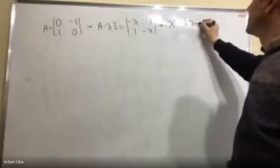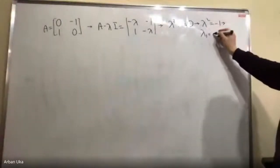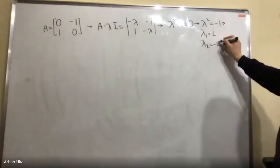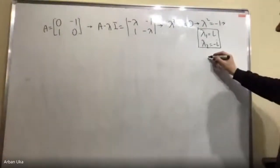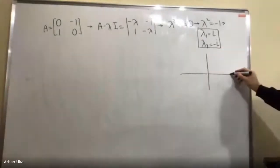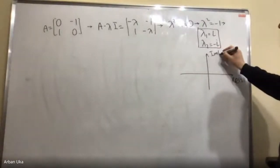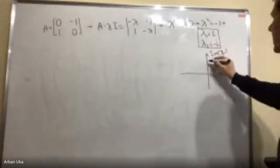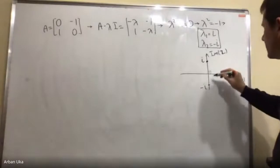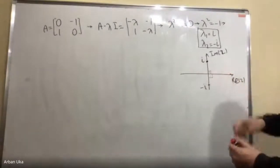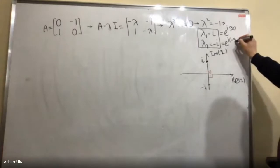Lambda squared is equal to minus one, so lambda one is equal to i and lambda two is equal to minus i. These are two complex eigenvalues. It is important to locate these numbers in the complex plane — the real part is on one axis, the imaginary part on the other. i is at plus 90 degrees and minus i is at minus 90 degrees, which means i equals e to the power i·90 and minus i equals e to the power i·(minus 90).